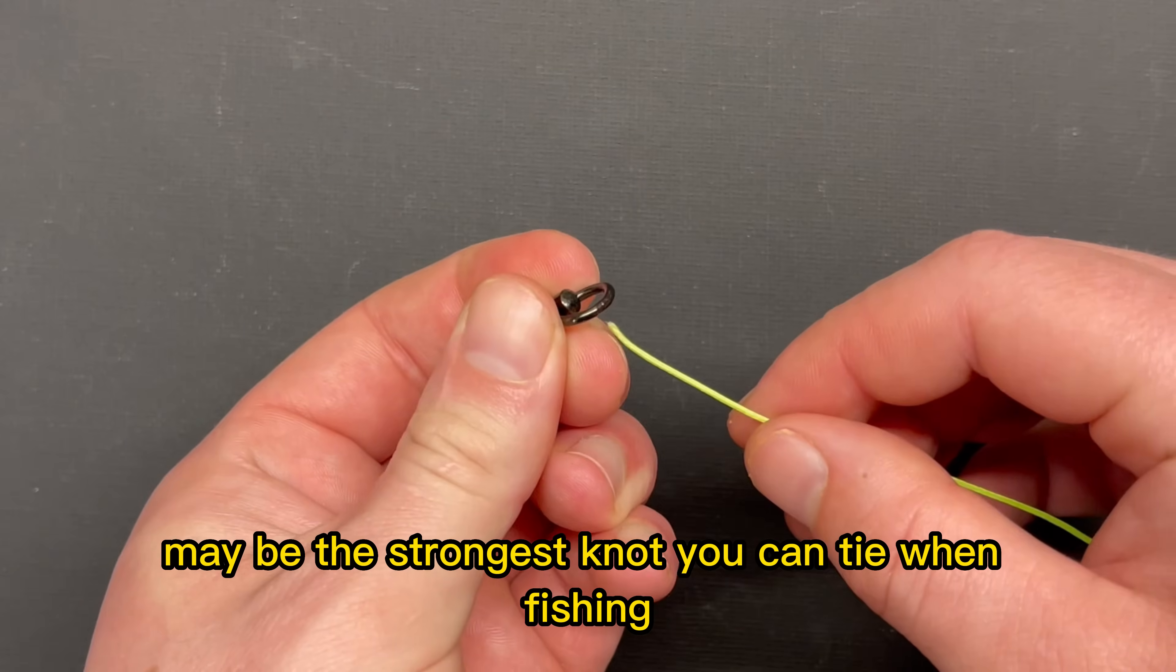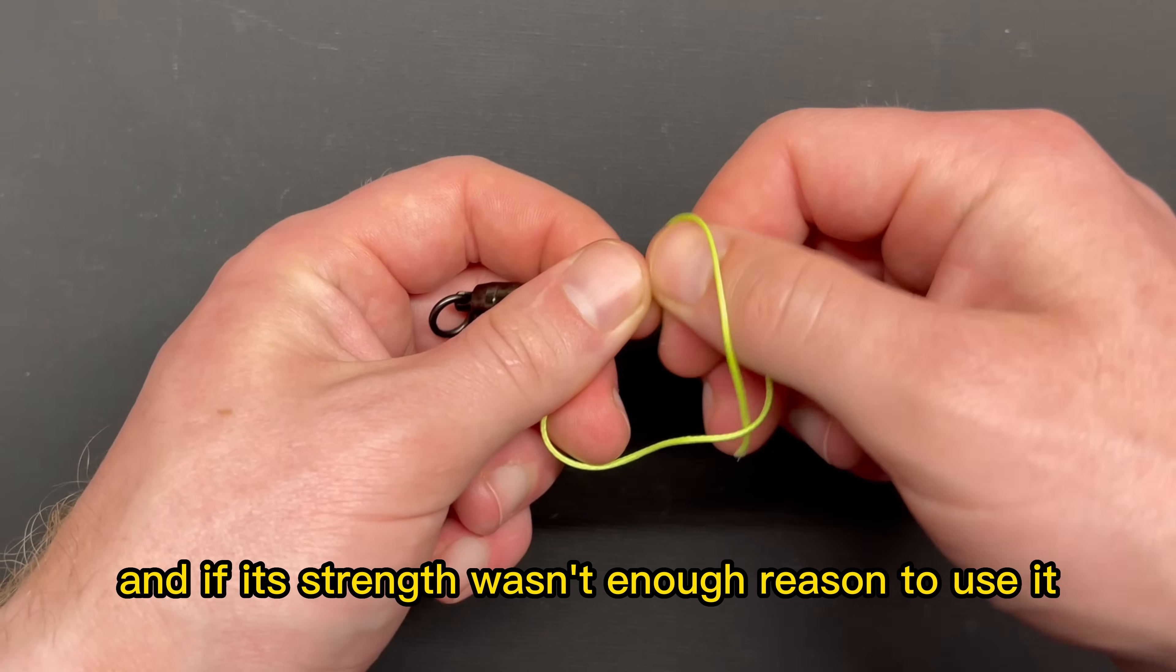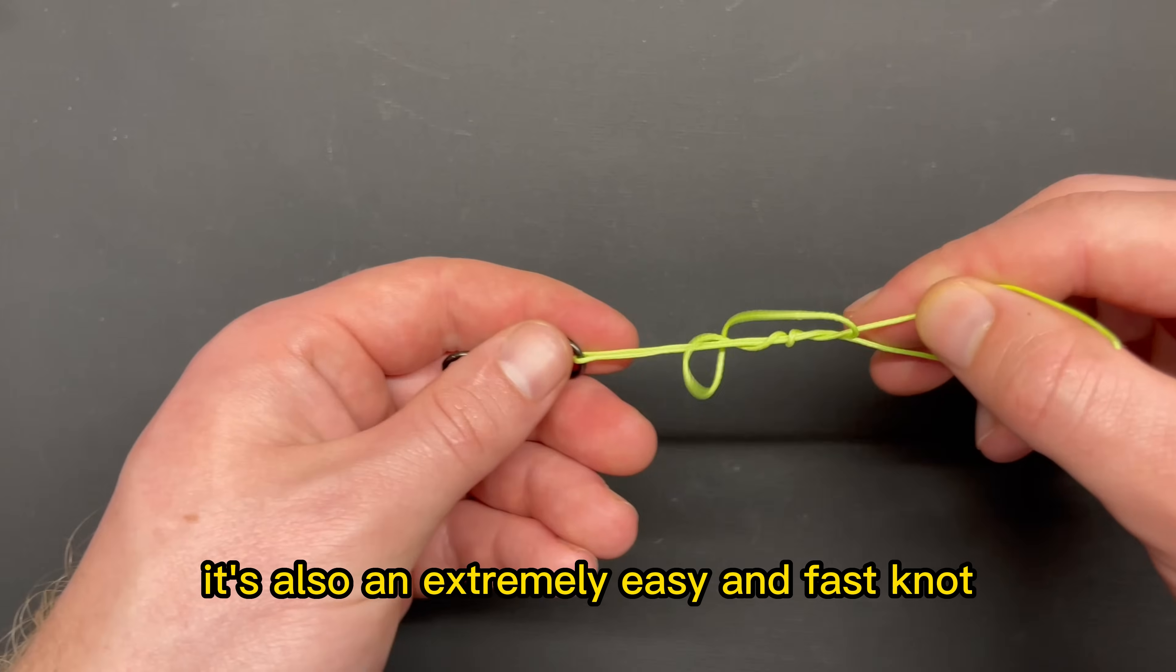The knot we are going to learn in this video may be the strongest knot you can tie when fishing. It's called the uni knot, and if its strength wasn't enough reason to use it, it's also an extremely easy and fast knot.